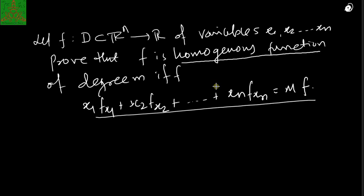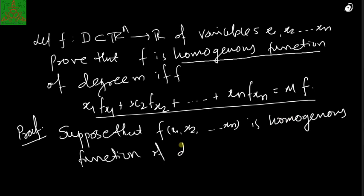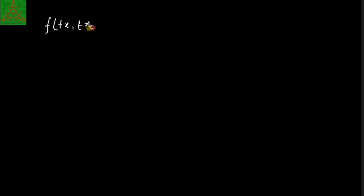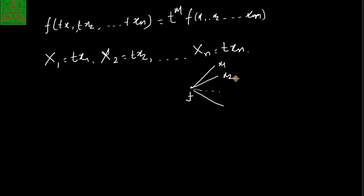The proof of this result is essentially the same as the proof of Euler's theorem for two variables — this is just the extended version. Suppose f(x1, x2, ..., xn) is a homogeneous function of degree m. Therefore we have f(tx1, tx2, ..., txn) = t^m · f(x1, x2, ..., xn). We now assume capital X1 = tx1, X2 = tx2, and so on up to Xn = txn, treating these as variables. The function f is a function of n variables X1, X2, ..., Xn, and these capital X's are themselves functions of t.